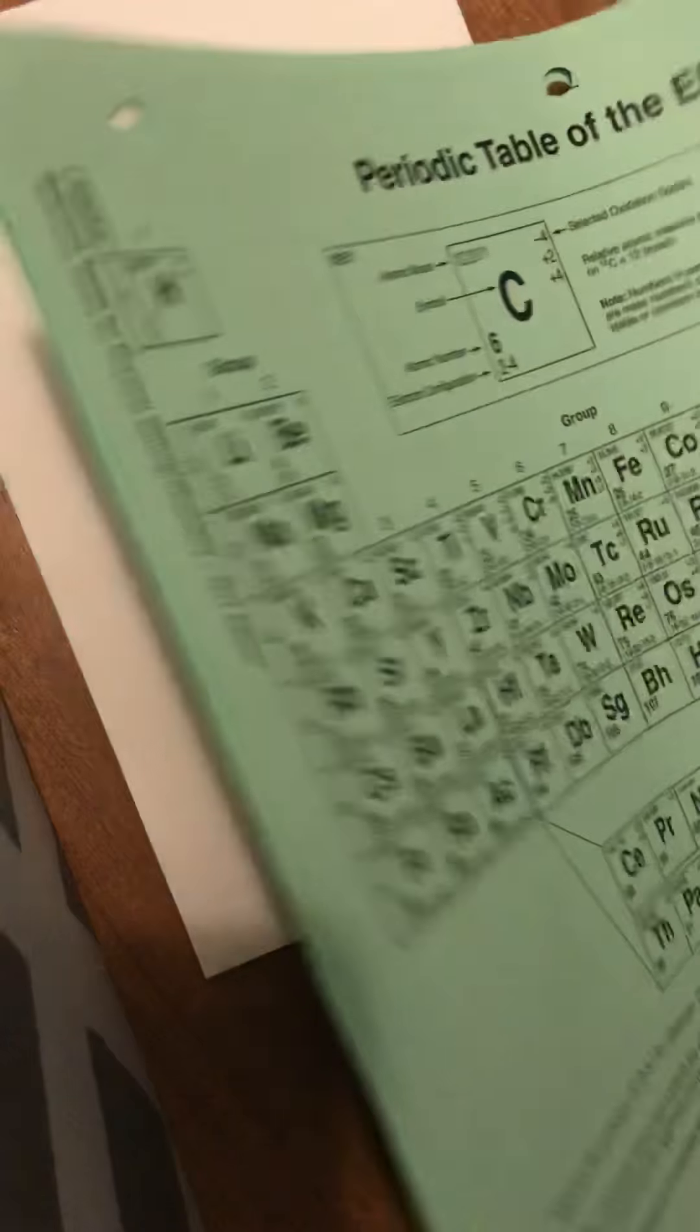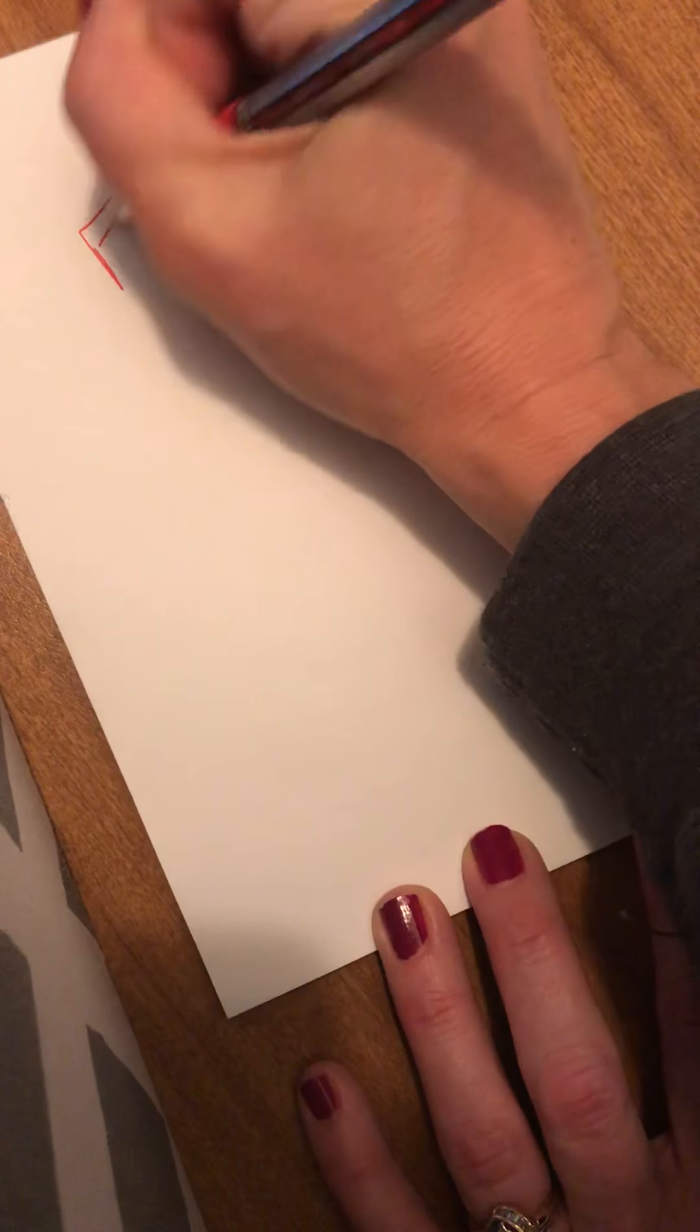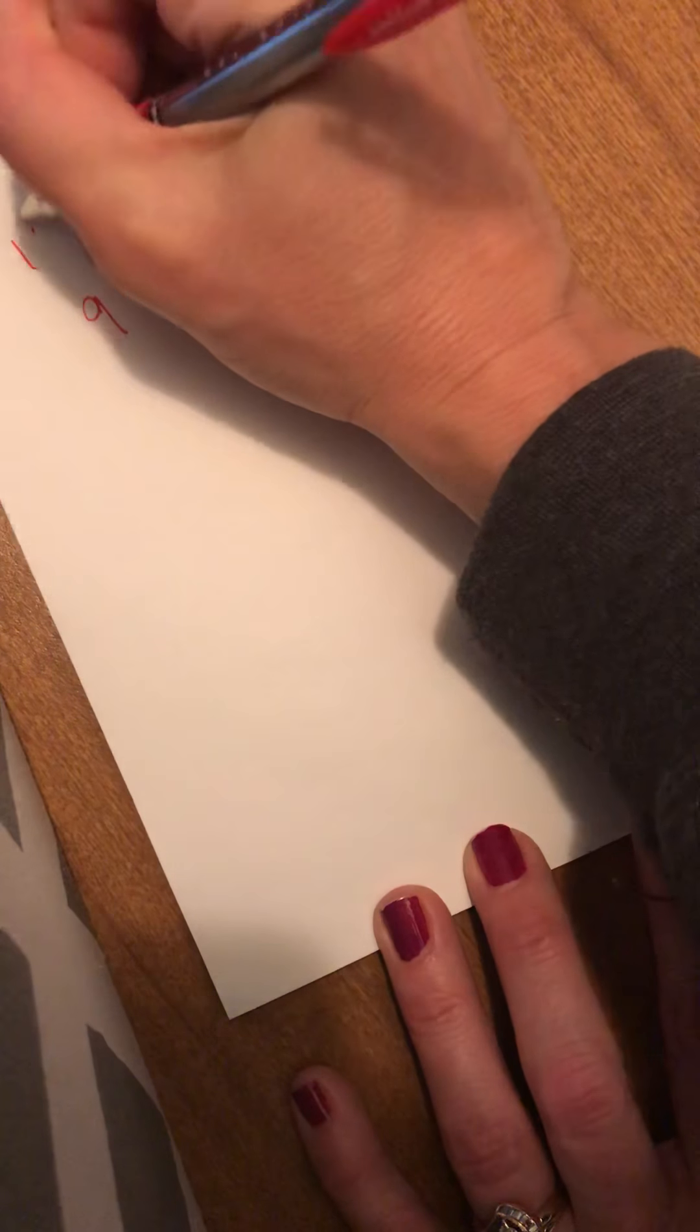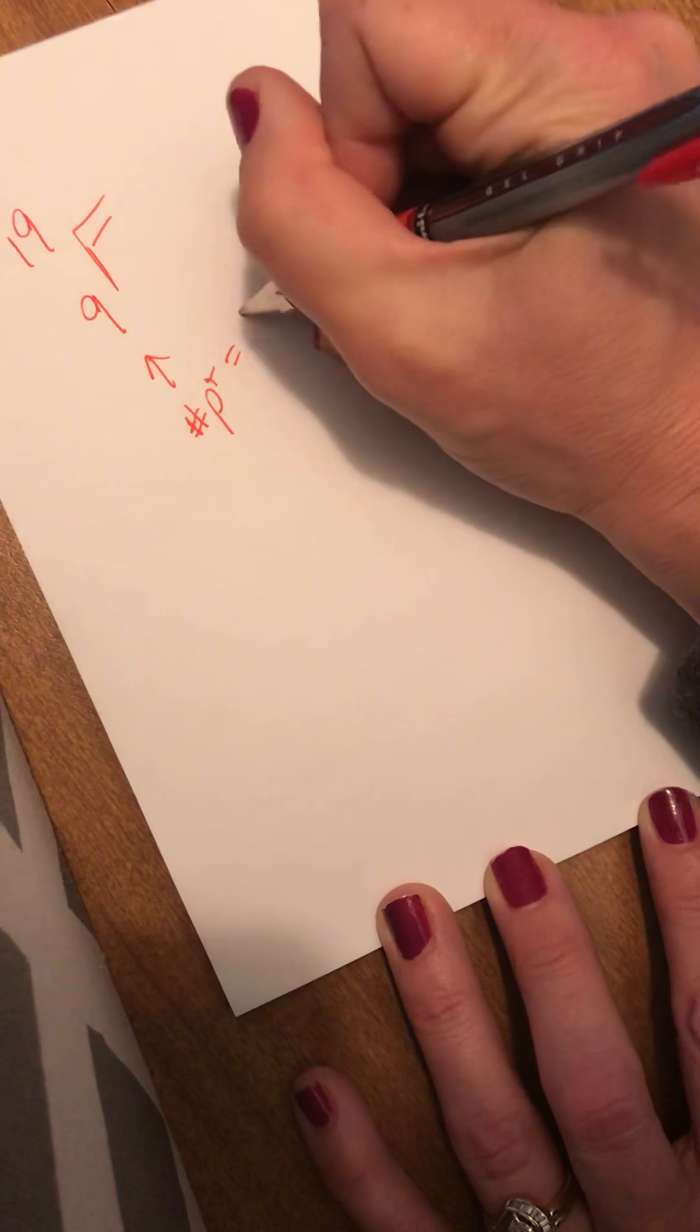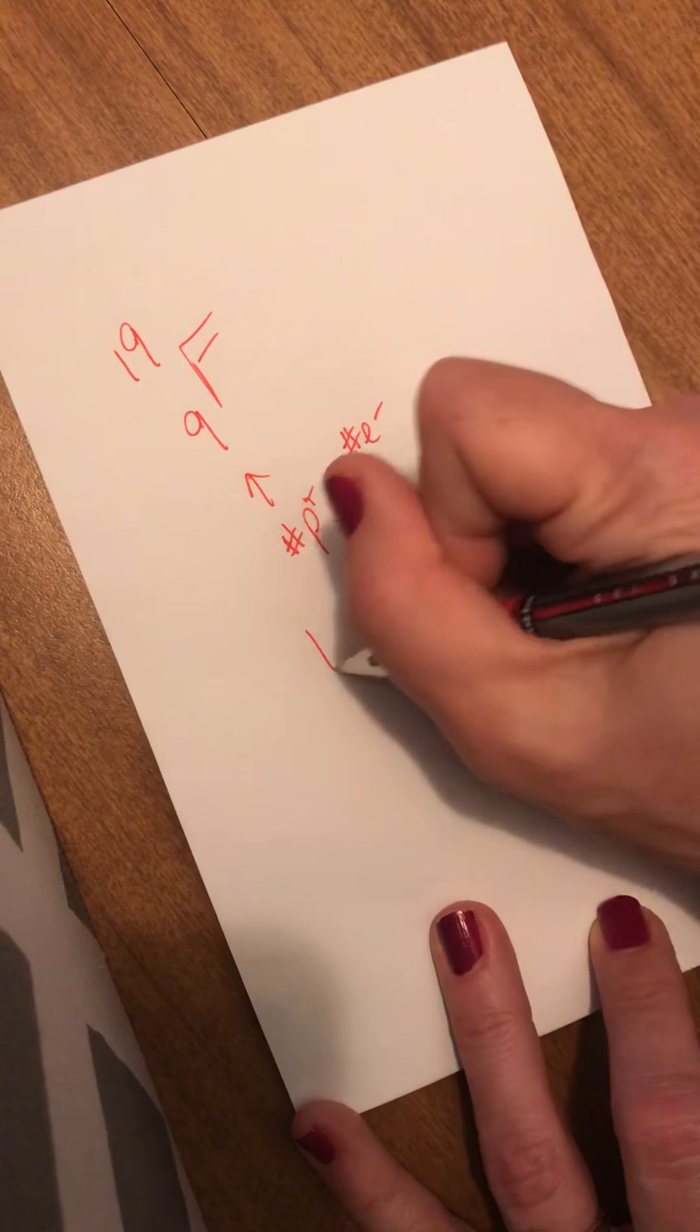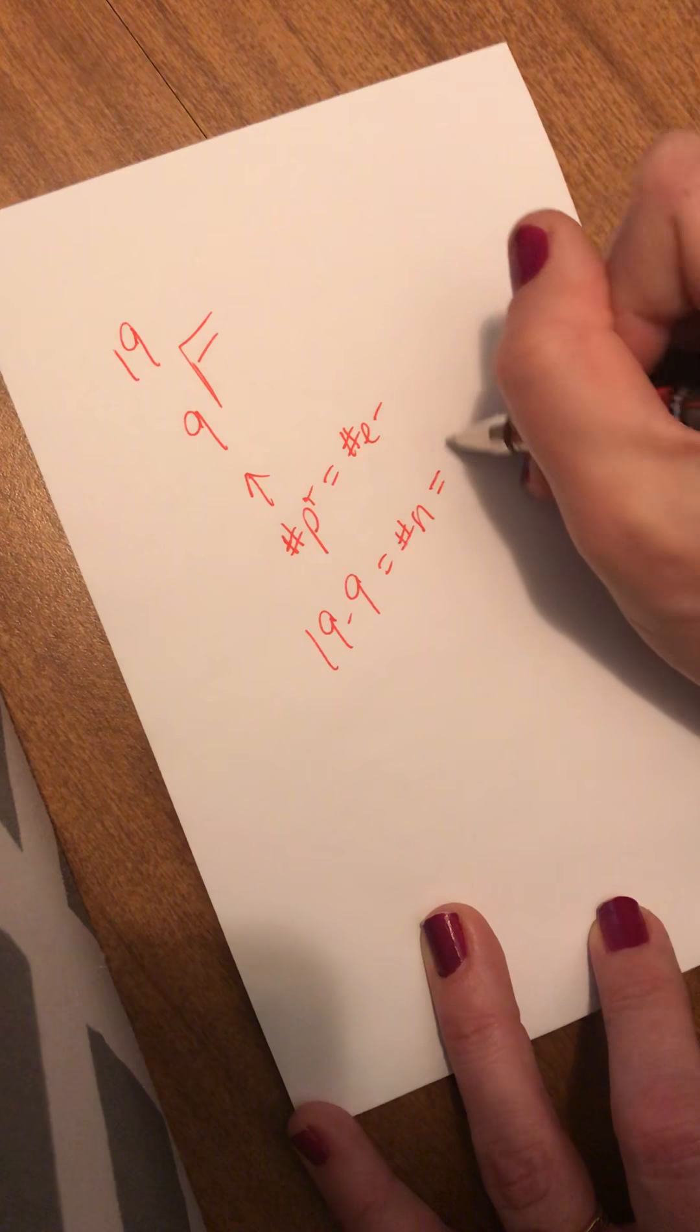Now, if I take something different, something from the right side of the periodic table, let's say fluorine. F, its atomic number is 9. Its mass is 19. So again, just for a little review, this is the number of protons. And it's going to equal the number of electrons as long as I have an atom. And 19 minus 9 will give me the number of neutrons. So that's 10.